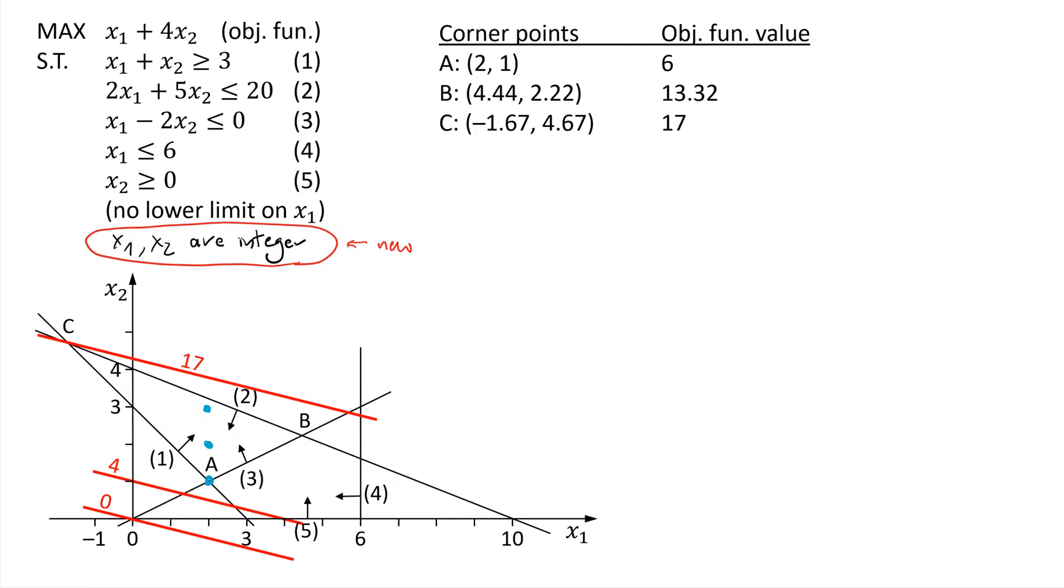I can, for example, go up to point (2, 2), which will be somewhere here. This is also integer feasible and clearly within the region. I can go to (2, 3), and I believe I'm still inside. And if I go to here, this is not a feasible solution because it doesn't satisfy constraint 2. So I'm going to erase it.